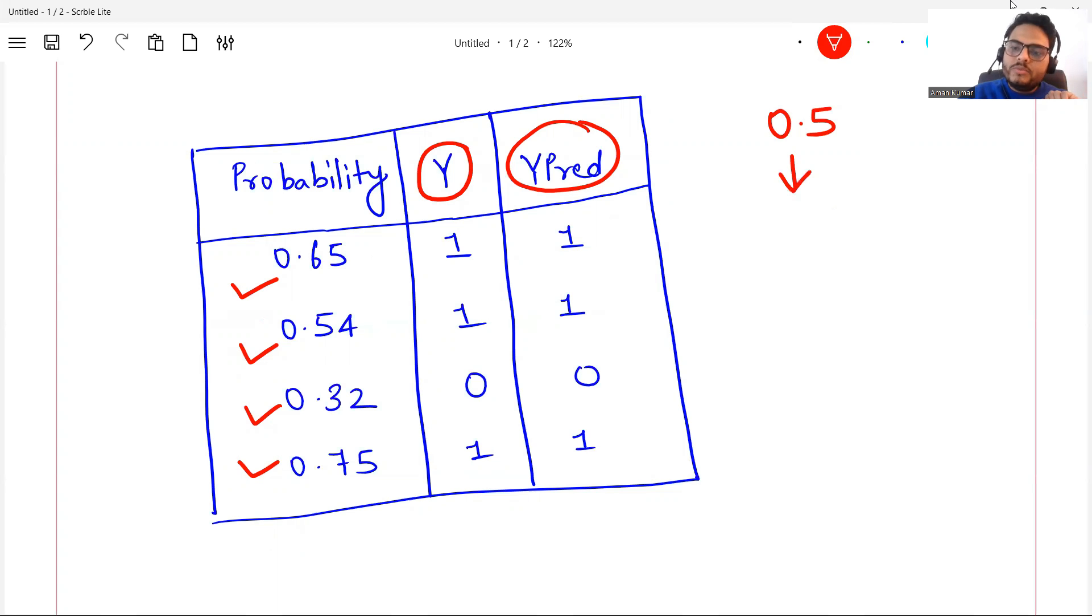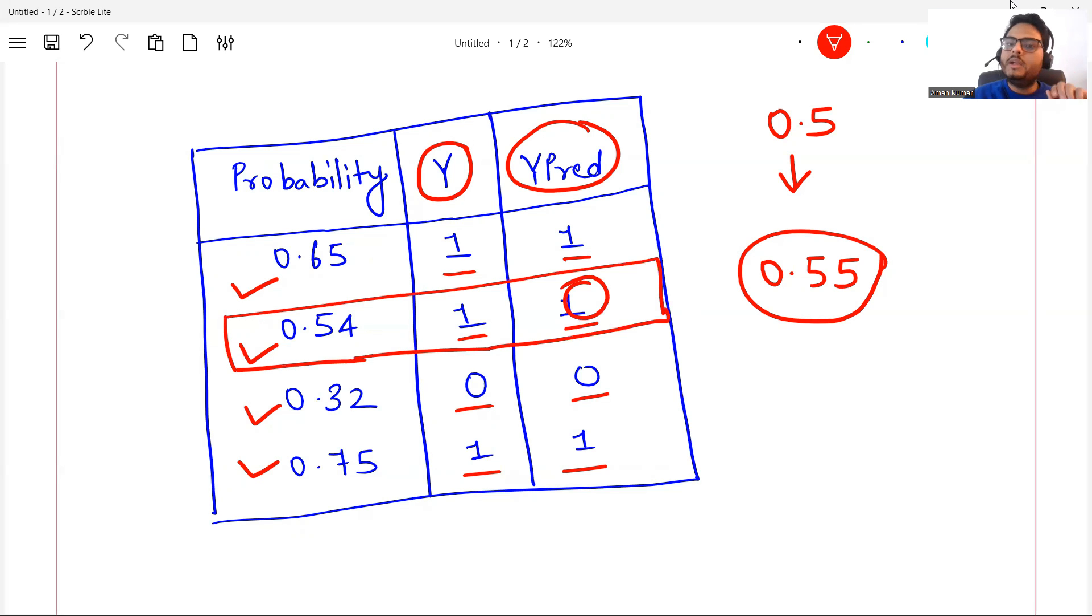If I ask you from 0.5 probability, what is the accuracy of this model? Everything looks fine. One is predicted as one, zero is predicted as zero. At the moment I tell you I want to change my threshold from 0.5 to 0.55, this one will be predicted as zero and this prediction will go wrong, your accuracy will come down, and all your TPR and FPR will get impacted.